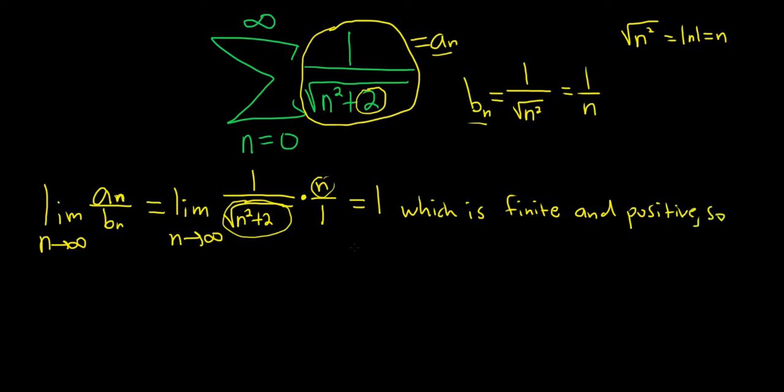So we can use the limit comparison test. So LCT applies. And so what LCT says is, whenever you can use it, that our original series and the sum of the b's will both behave the same.